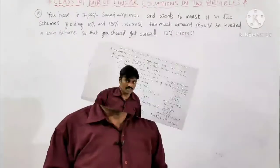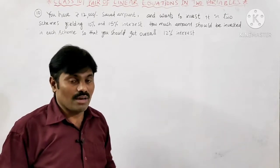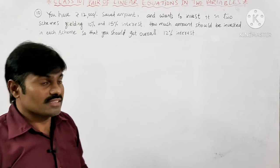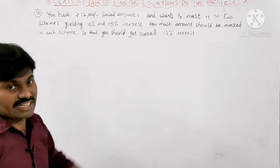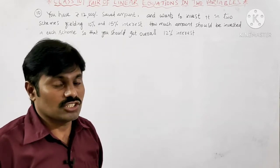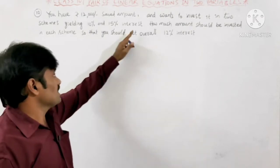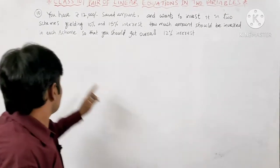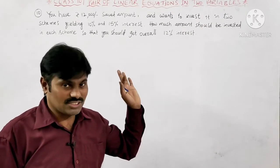Now we discuss question number 10, the last problem of this exercise. You have 12,000 rupees saved and want to invest it in two schemes — one yielding 10% interest and the other yielding 15% interest. How much amount should be invested in each scheme so that you get an overall 12% interest on the total amount?